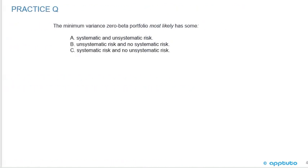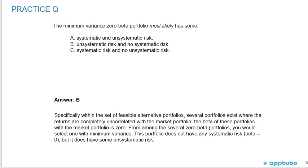Quick practice question: The Minimum Variance Zero Beta portfolio most likely has — A: systematic and unsystematic risk; B: unsystematic risk and no systematic risk; or C: systematic risk and no unsystematic risk. The correct answer is B. Within the set of feasible alternative portfolios, several portfolios exist where returns are completely uncorrelated with the market portfolio — the beta of these portfolios is zero. From among the zero beta portfolios, you select the one with minimum variance. This portfolio has no systematic risk (beta equals zero), but it does have some unsystematic risk.